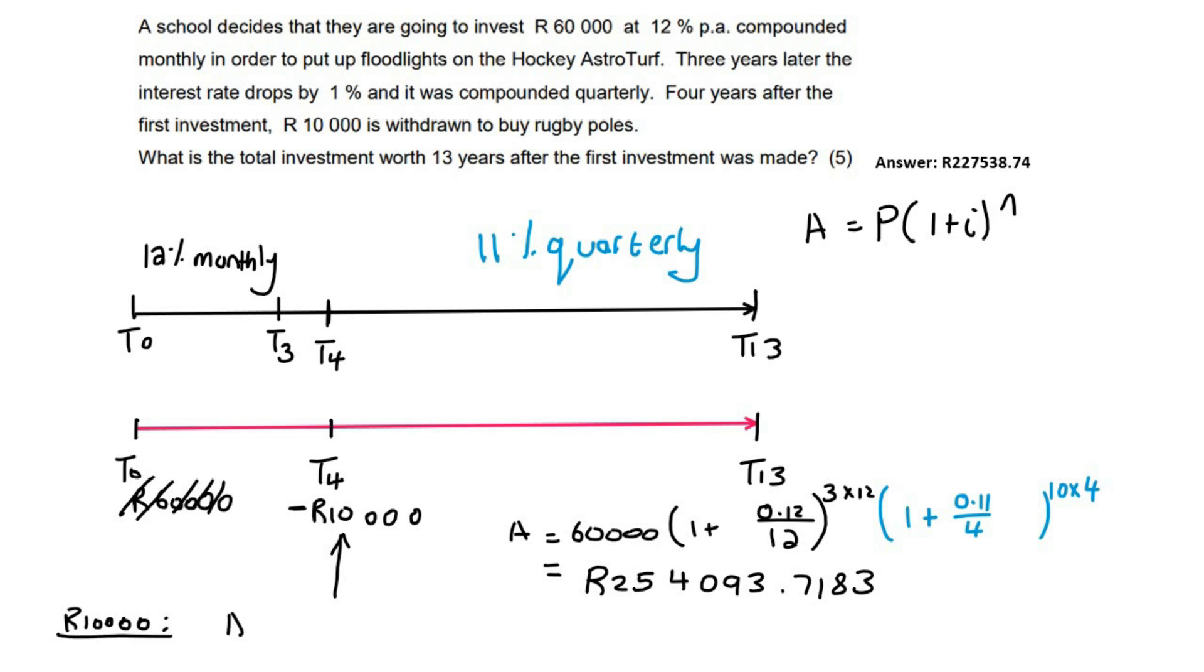So we can use the same formula. So it's A equals to 10,000. Some of you might be like, Kevin, this one's a minus. Doesn't that change anything? Not at all, guys. It just means we're going to minus it at the end. But it doesn't change any of the calculations.